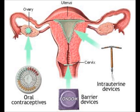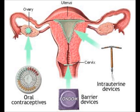Contraceptive methods may prevent release of mature gametes from the gonads, fertilization, or implantation of the embryo. Reproductive technologies can assist infertile couples by hormonal methods or in vitro fertilization, and can also help detect problems before birth.